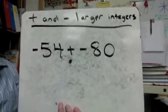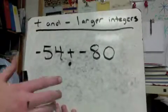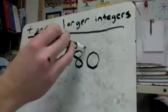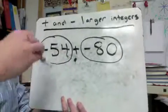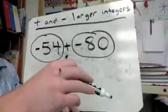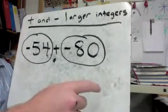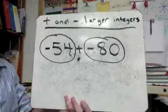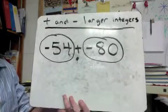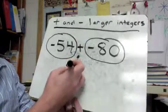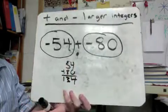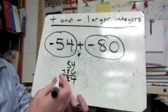Here's my first one: negative 54 plus negative 80. We've got the plus so we're in good shape. I've got 54 negatives and I've got 80 negatives — I'm not going to draw all those, that would take forever. But we can visualize what we would have: 54 negatives here and 80 negatives here, nothing to cancel out. So we just ask how many negatives do we have altogether: 54 plus 80 is 134.